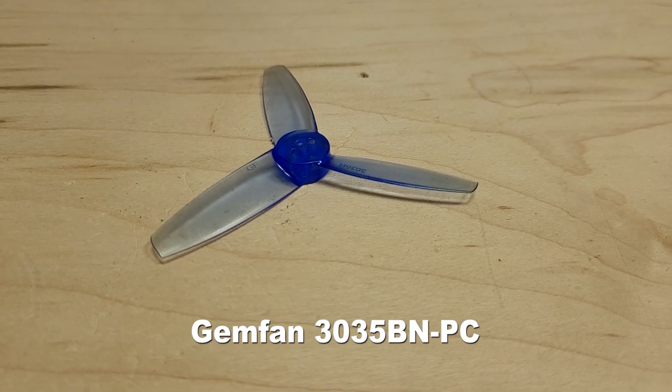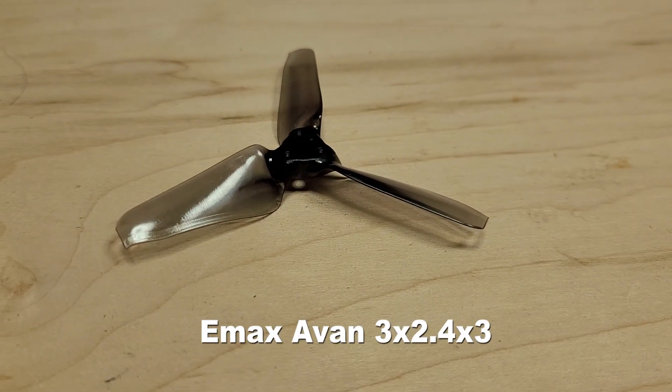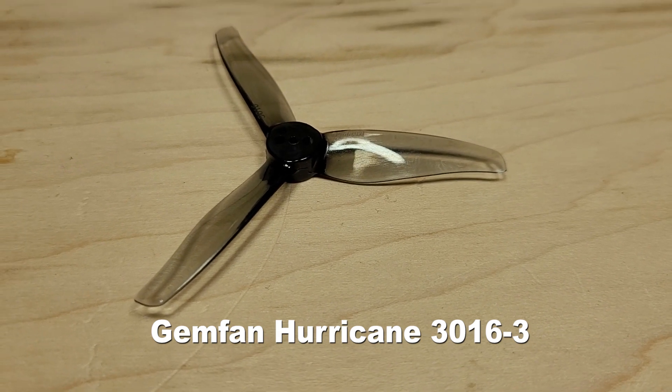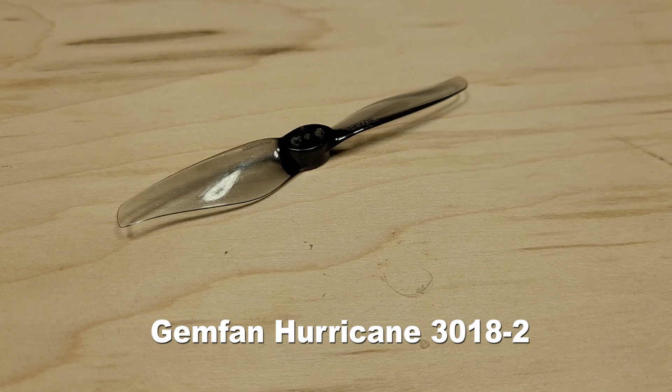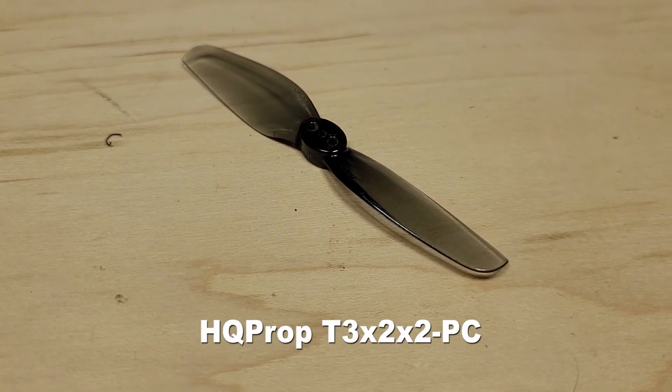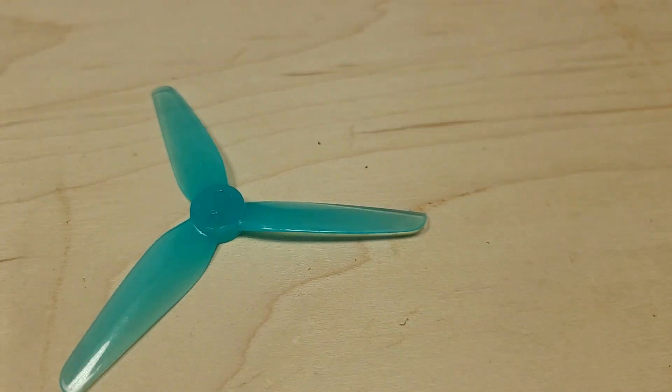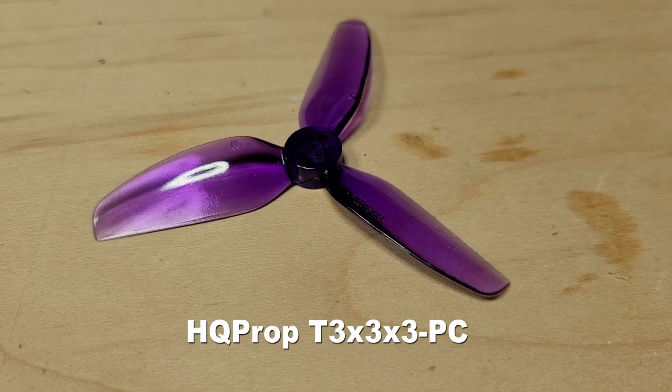Gemfan 3-blade 3.5-inch pitch bullnose propellers. Emax AVAN 3-blade 2.4-inch pitch propellers. Gemfan Hurricane 3-blade 1.6-inch pitch propellers. Gemfan Hurricane 2-blade 1.8-inch pitch propellers. HQ Prop 2-blade 2-inch pitch propellers. Heads up HQ Prop 3-blade 1.8-inch pitch propellers. HQ Prop 2-blade 3-inch pitch propellers. HQ Prop 3-blade 3-inch pitch propellers.